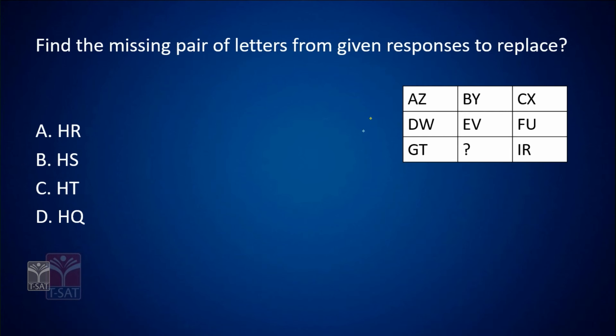In the next table, the pattern is A/Z, B/Y, C/X. The first alphabets are incremental: A, B, C, D, E, F, G, H, I. The second alphabets count down from the end: Z, Y, X, W, V, U, T, S. The question mark position corresponds to the 8th pair, so the second alphabet is S. The answer is option B.